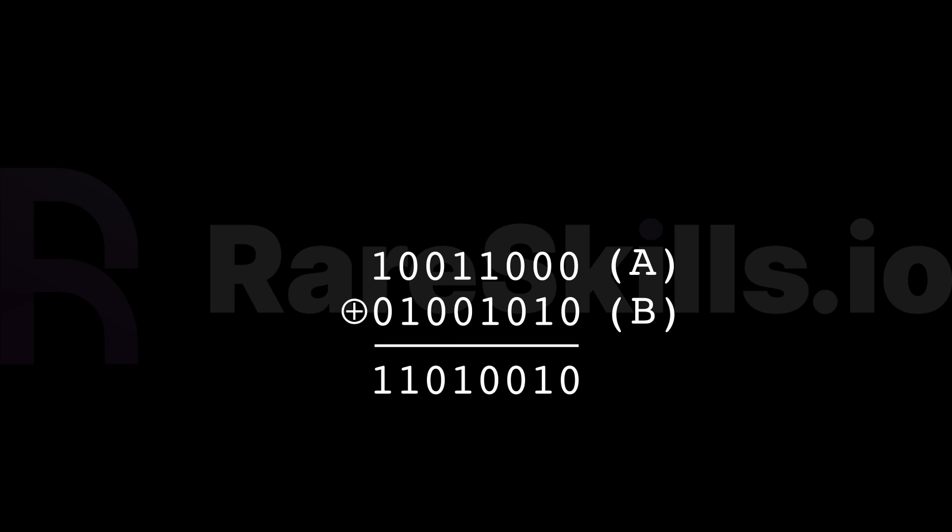Here is an example. Wherever both a and b have the same bit value, the output is 0, and where they are different, it returns 1. Note that we use the circle plus operator for xor.